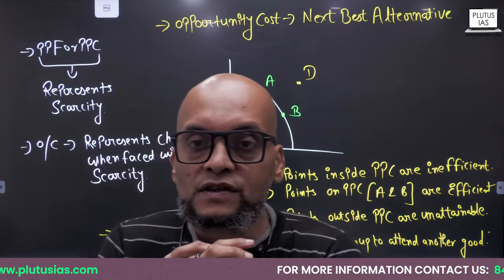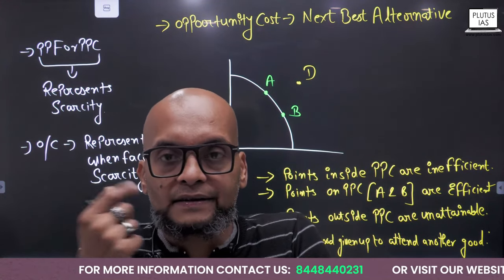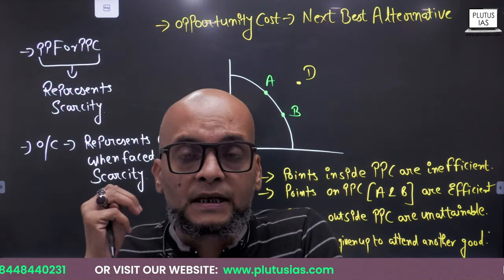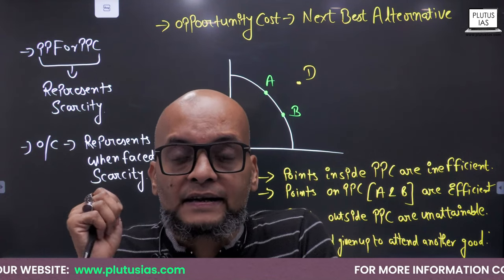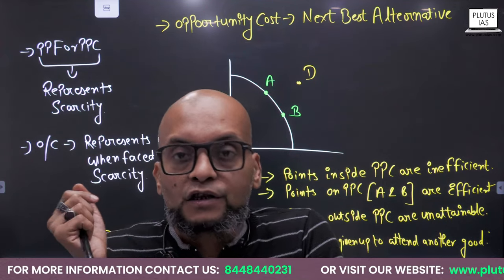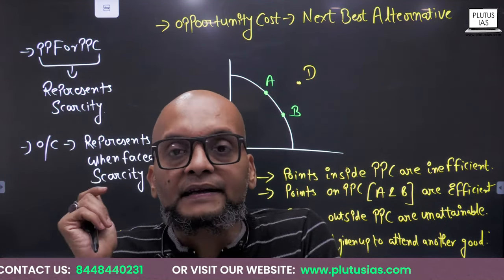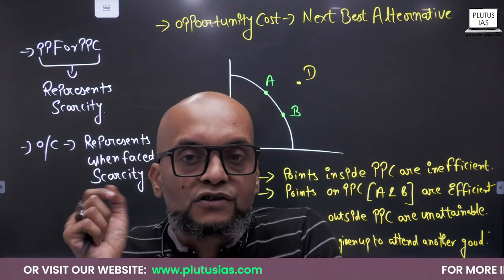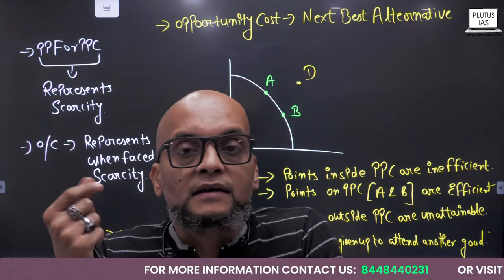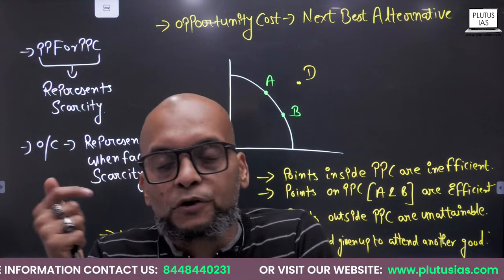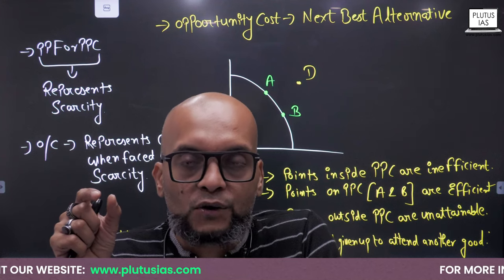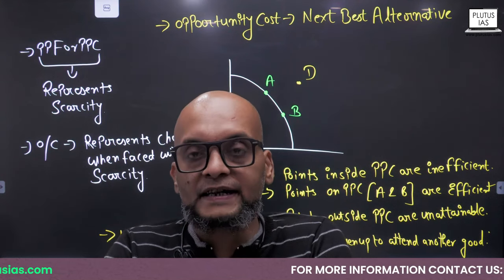Take another example. Mr. Shyam is working in Reliance and his salary is 50,000 rupees per month. Mr. Shyam gets an offer from Tata Motors with a salary of 45,000 rupees per month. So Mr. Shyam obviously rejected the offer from Tata Motors. What is the opportunity cost of Mr. Shyam when he is working in Reliance? The next best alternative — that is 45,000 rupees — because that is the next best alternative available to him.